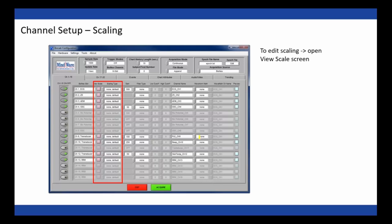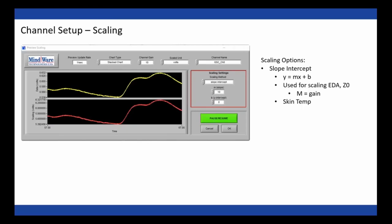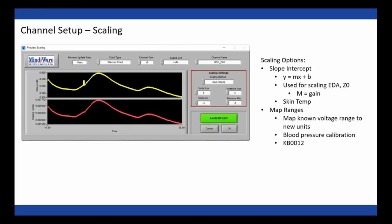Now that we've talked about gain, we can talk about scaling. Scaling is used to take a signal from volts to a more appropriate unit of measure, like ohms for impedance or microsiemens for skin conductance. You press the purple button to open the scaling screen. We have two scaling options: slope intercept — the y = mx + b equation, where m equals the gain when scaling EDA or impedance — and for skin temp the equation is more complex but still fits that format. The other option is map ranges, which lets you map a known voltage range to a certain set of units, particularly useful for blood pressure calibration.